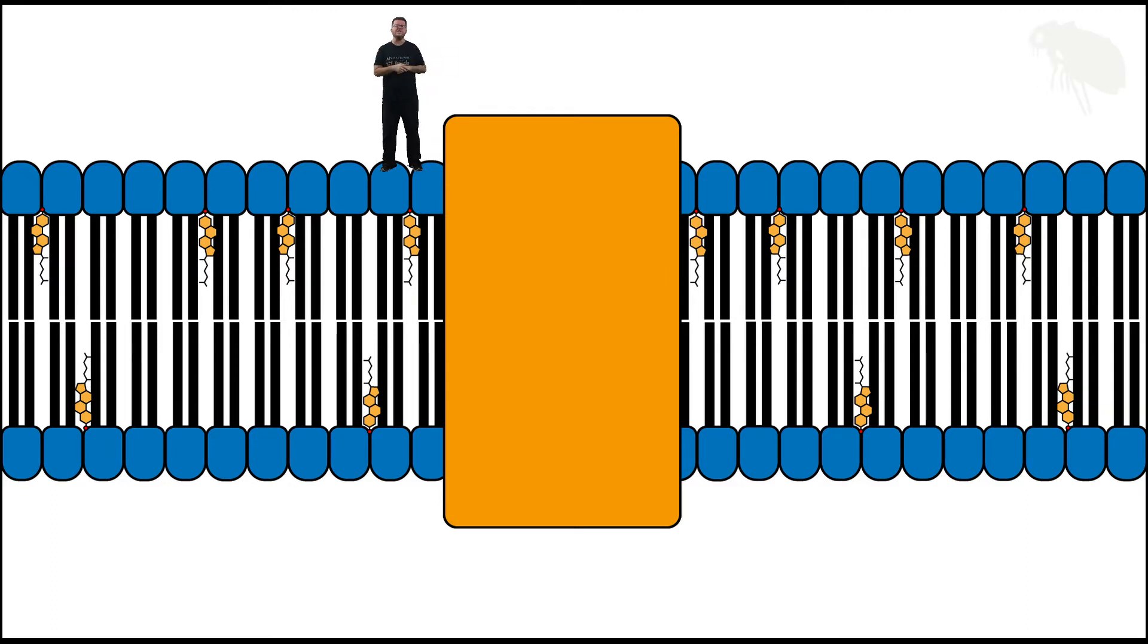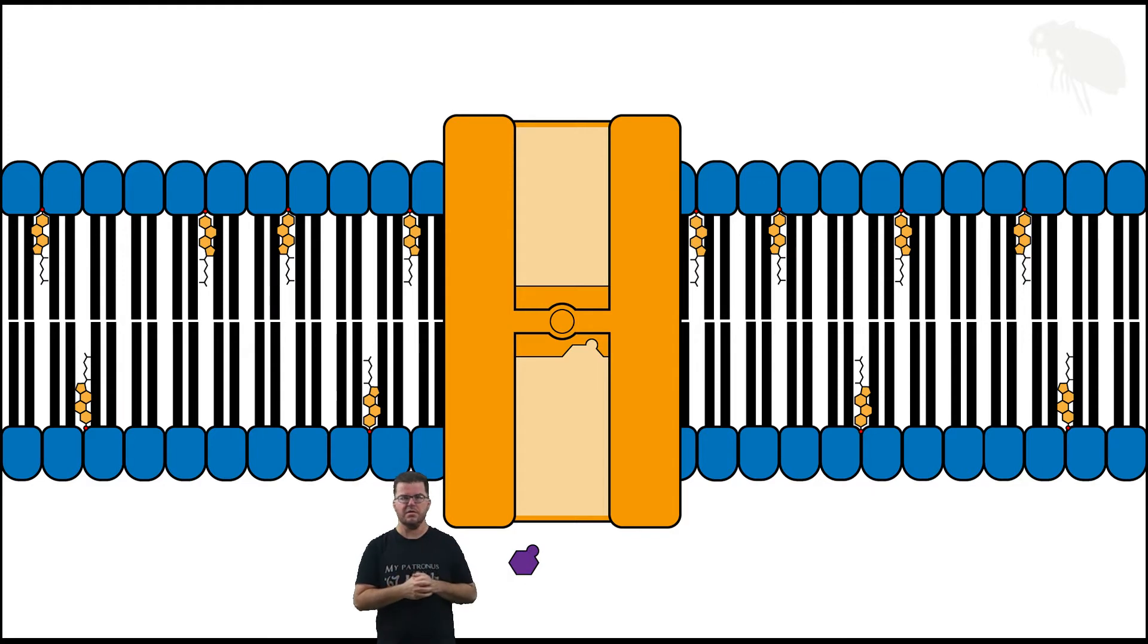So let's make this guy transparent and see what happens. Now you should see a binding site in there that looks like it matches this monosaccharide sugar. So this is a carrier for the sugar in question.